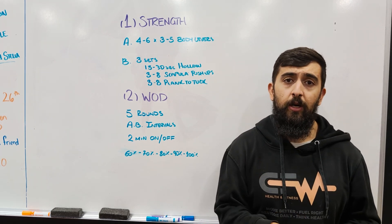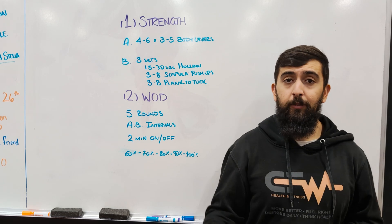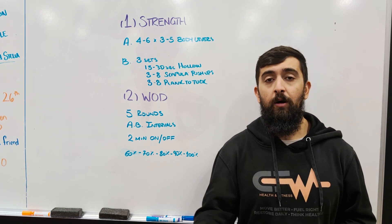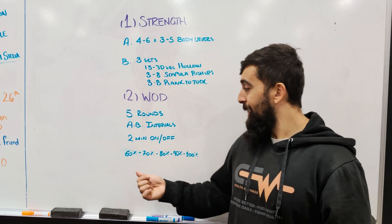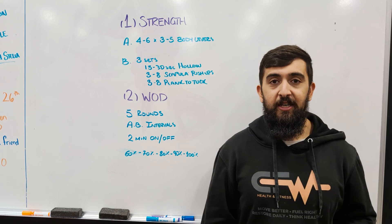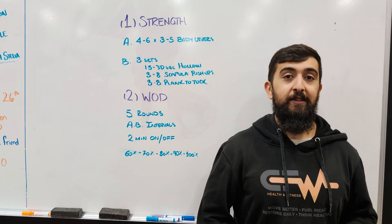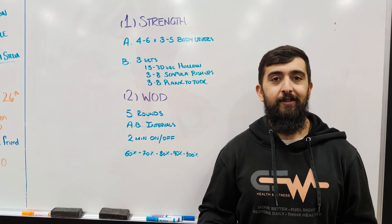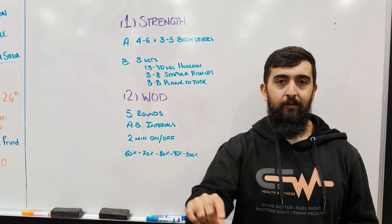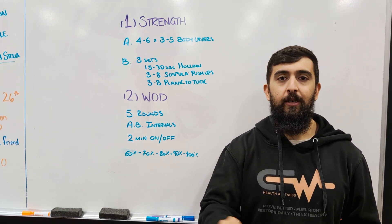Track your calories as well. And if you want to go above and beyond with this, maybe even write how hard it felt. Maybe you did 60%, it was like a 6 out of 10. Then you did 70% and it was like a 10 out of 10. Write that down. Then it gives you a good idea that maybe you went too fast and you can adjust your pace a little bit on the next round.